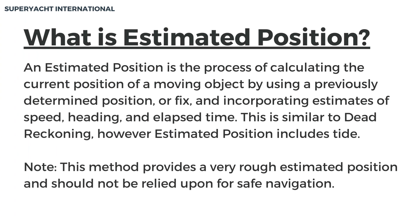An estimated position is the process of calculating the current position of a moving object by using a previously determined position, or fix, and incorporating estimates of speed, heading, and elapsed time. This is similar to dead reckoning, however estimated position includes tide.